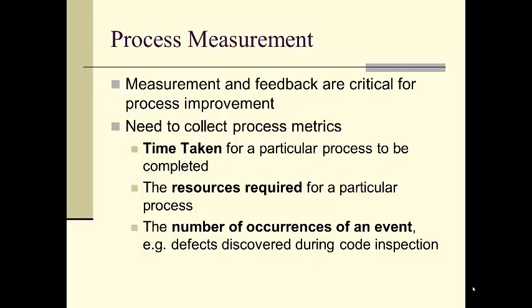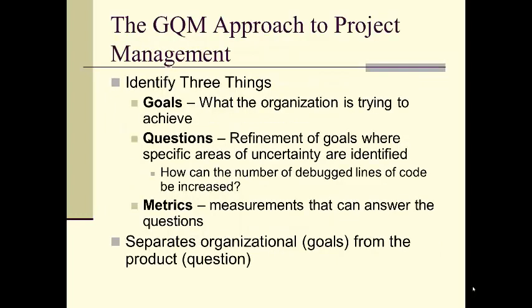An interesting take on this is the U.S. Government's Paperwork Reduction Act, which gives specific amounts of time required to fill out forms and gather data for various federal processes. Another approach to process improvement is the GQM approach — Goal, Question, Metric. In GQM, we identify three things: the goals, the questions, and the metrics. GQM specializes in separating organizational goals from the product questions, and this is one approach to process measurement.